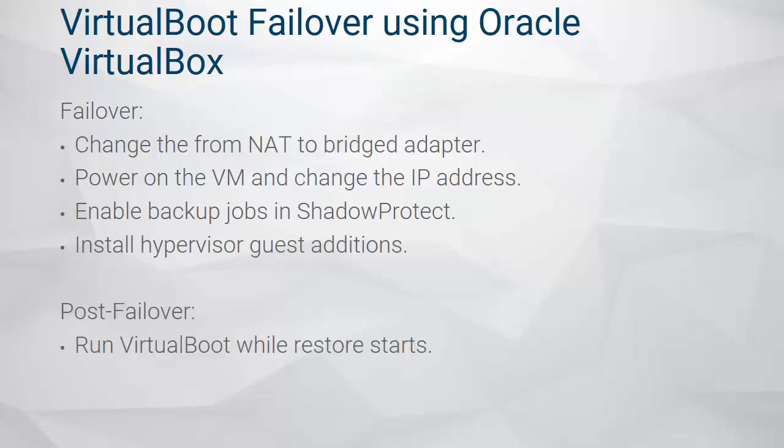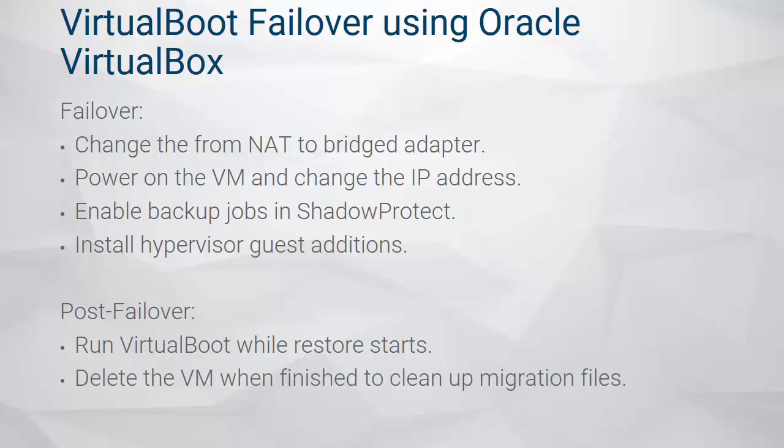Virtual Boot can run as the production system while a bare metal restore is started on a replacement system. The manual HSR process is used to perform a bare metal file restore. Delete the Virtual Boot VM when finished using it for failover. This will clean up the migration files used to convert the GUID in the backup chain.